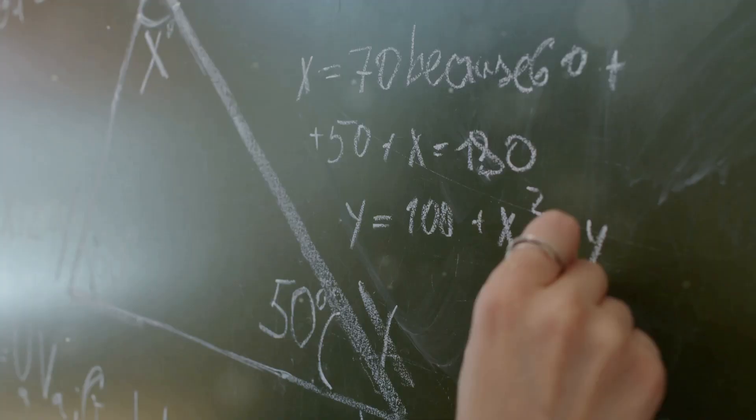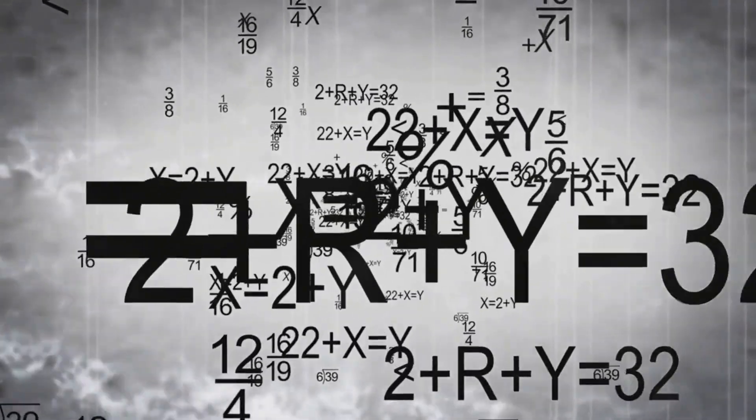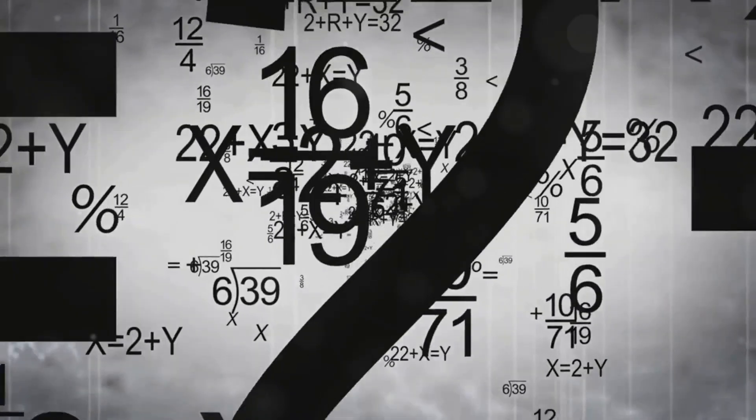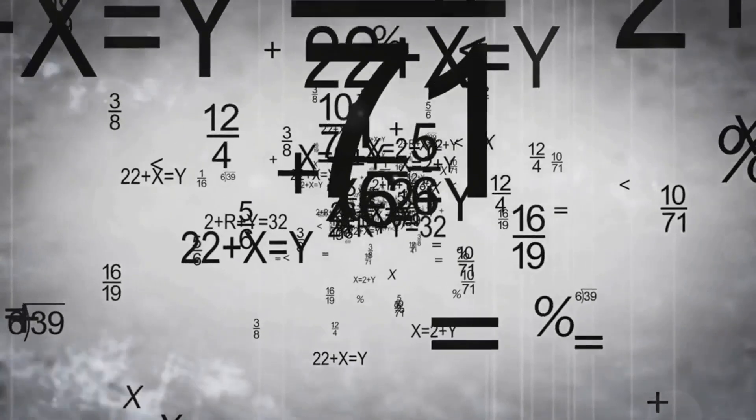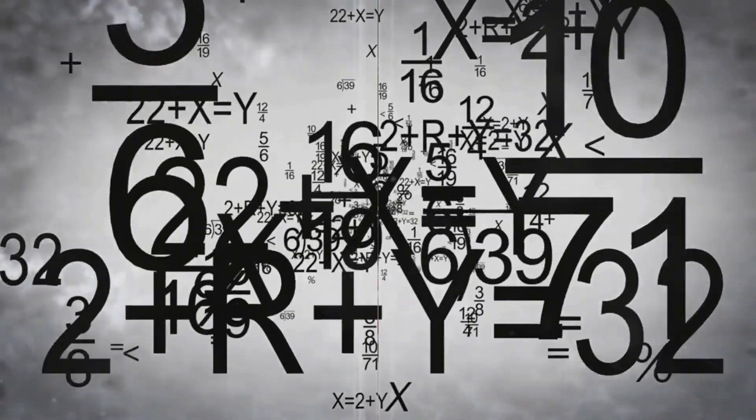Pythagoras discovered complex relationships between numbers, presenting them as propositions and ratios. He introduced the concept that numbers could explain natural phenomena, a principle that continues to underpin modern science and mathematics.